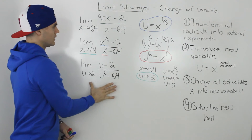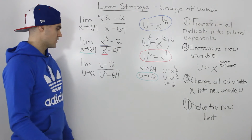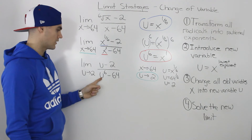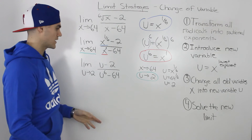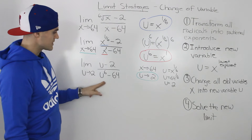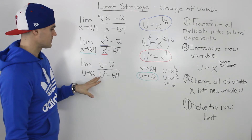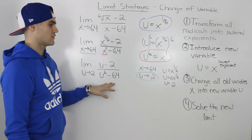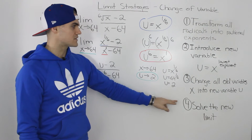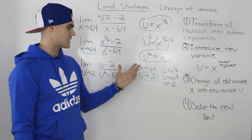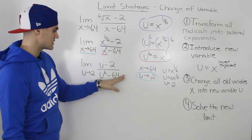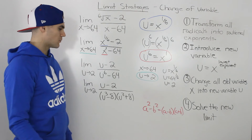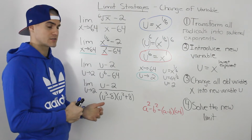This new limit is much nicer to work with — no more rational exponents. However, trying direct substitution with u equals 2 gives a denominator of 0, since 2 to the power of 6 is 64 and 64 minus 64 is 0. So we need to do some factoring. The toughest part of this question is actually step 4 — factoring u to the power of 6 minus 64. There are multiple ways, including factor theorem, but there's a cleaner approach.